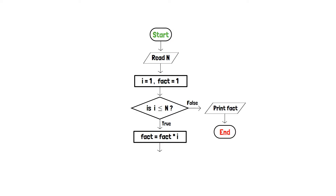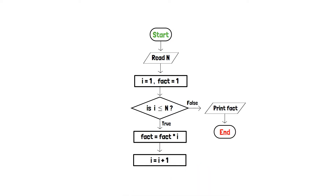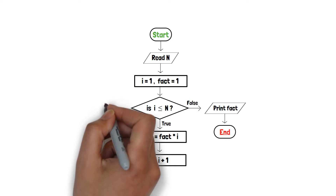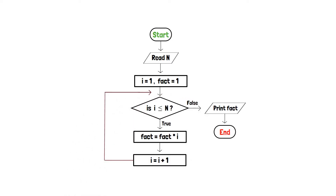Moreover, another process box is added to increment i by 1. And finally, a loop is created before the decision box such that it will verify the value of i for each iteration. Thus, unless and until the value of i is less than or equal to n, the fact variable is increased by i times. And when it exceeds, fact is printed and the program is terminated.